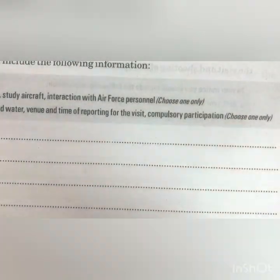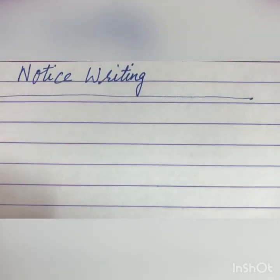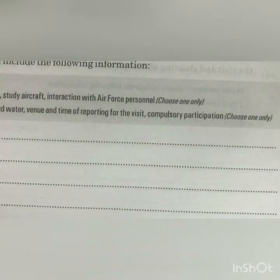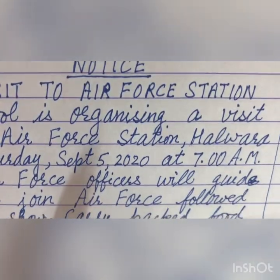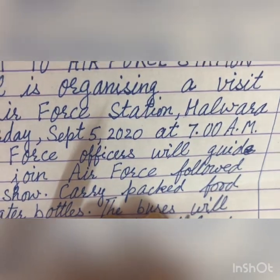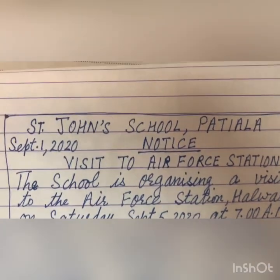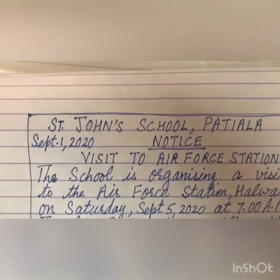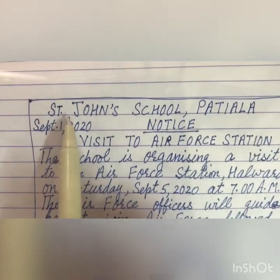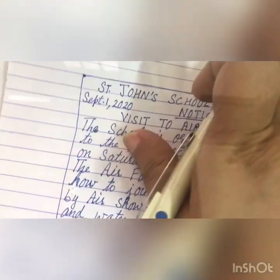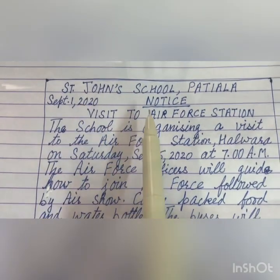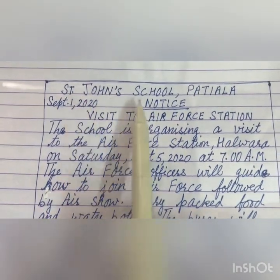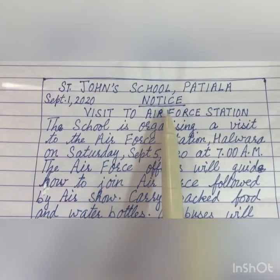Now I will tell you how you will write the notice. First of all, you will draw a box with pencil and scale. The first line inside the box is the name of the school. You will write the name of the school — for example, Saint Jones School, Patiala — in block letters.